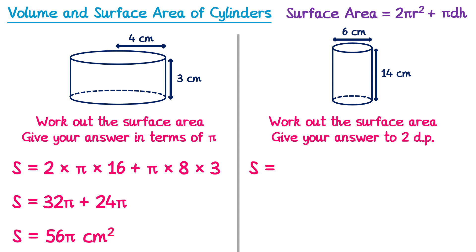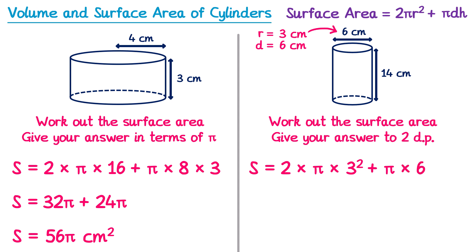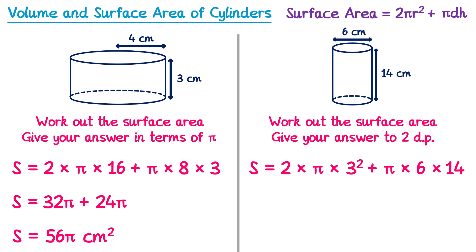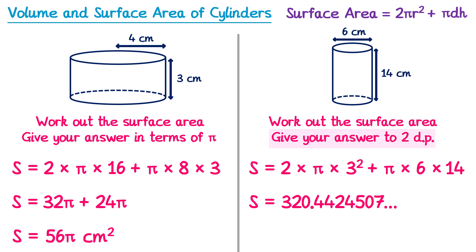For the second question: surface area equals 2 times π times the radius squared. But the radius wasn't given — the diameter is 6, which means the radius is 3. So multiplied by 3 squared, then we add π multiplied by the diameter (which is 6), multiplied by the height which is 14. This question says to give your answer to two decimal places, so we type all of this into the calculator, and rounding to two decimal places we get 320.44 centimeters squared.